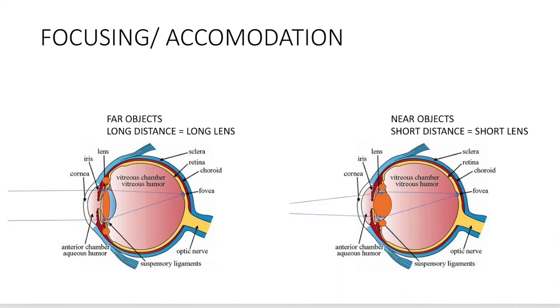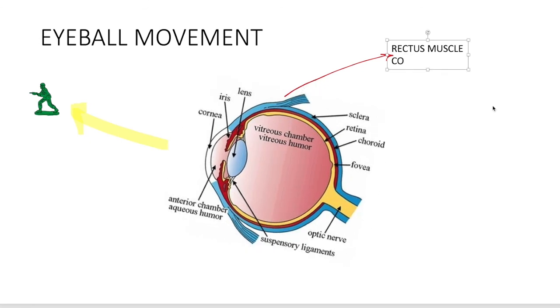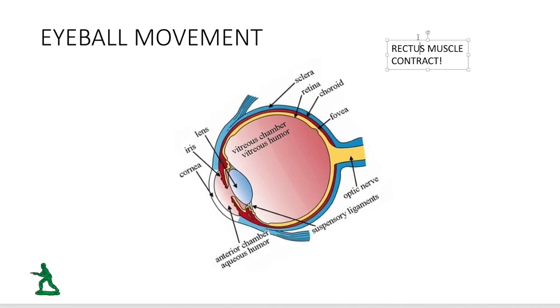The eyeball is connected to muscles called the rectus muscle. And of course, for it to turn to the direction it wants to see, that rectus muscle of that direction has to contract. So if it wants to look down, the lower muscle has to contract.